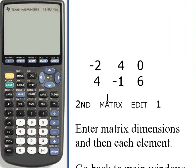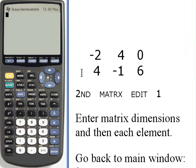So here's the matrix we'll be working with. It's a 2 by 3 matrix. The first row is negative 2, 4, and 0. And the second row is 4, negative 1, and 6.